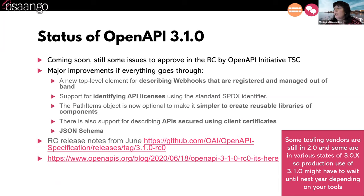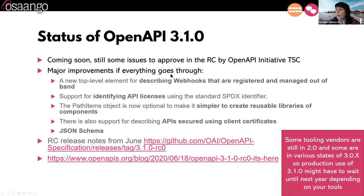What's the status with OpenAPI 3.1.0? It's still in release candidate, but the master repo of the final version has been started already. Most of the comments coming in for 3.1.0 are already collected to that master branch, but there are still some issues to settle.